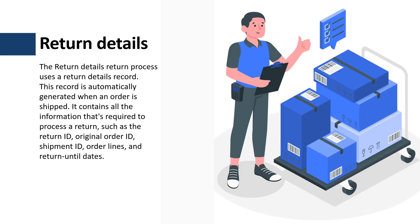Let's first get started with the return details. The return details process uses a return details record that is automatically generated when an order is shipped. The return details record contains all the information required to process a return, such as the return ID, original order ID, shipment ID, order lines, and the return until dates.